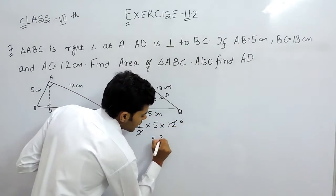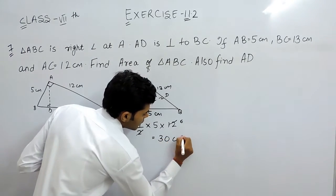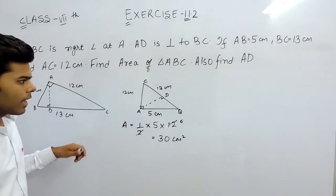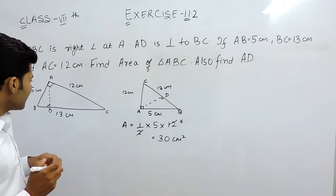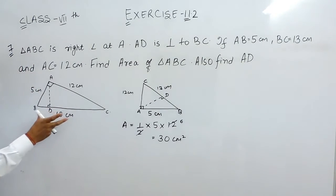So 2 times 6 is 30 cm square. Now if we consider this figure.